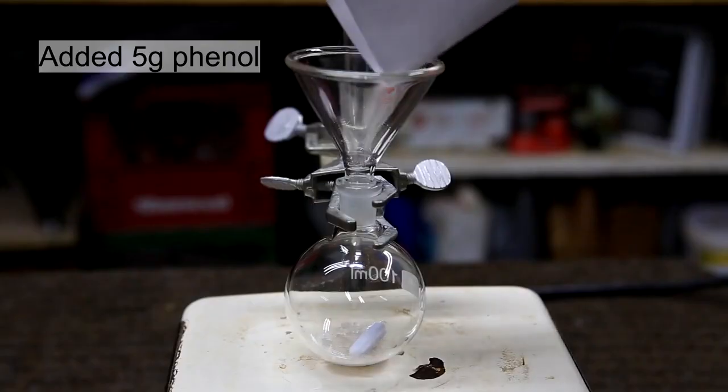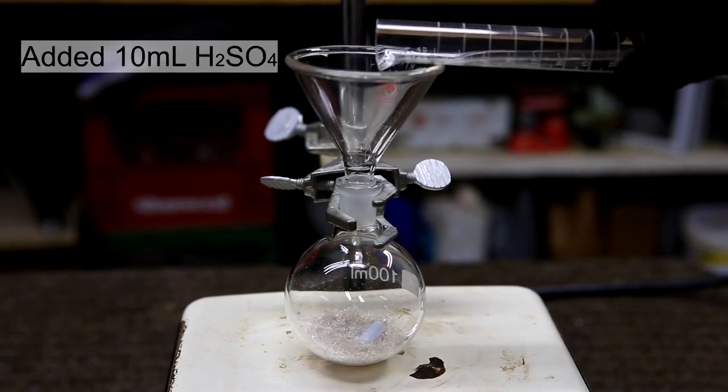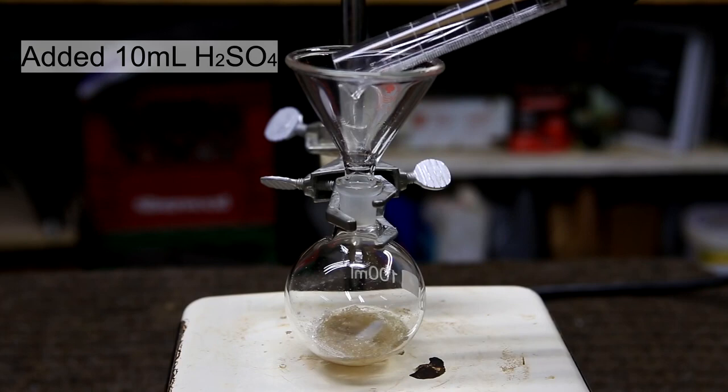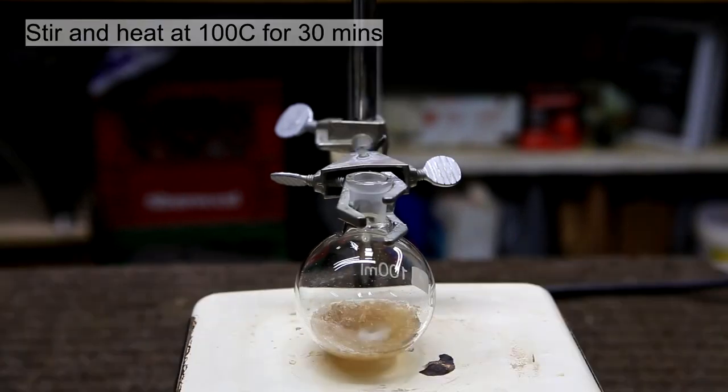5 grams of phenol is added to a round bottom flask. To this is added 10 milliliters of concentrated sulfuric acid. The mixture is then stirred and heated at 100 degrees Celsius for 30 minutes.